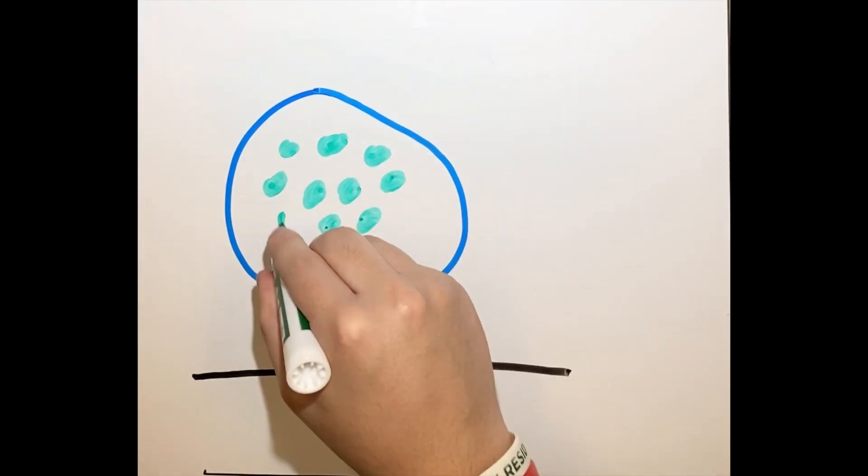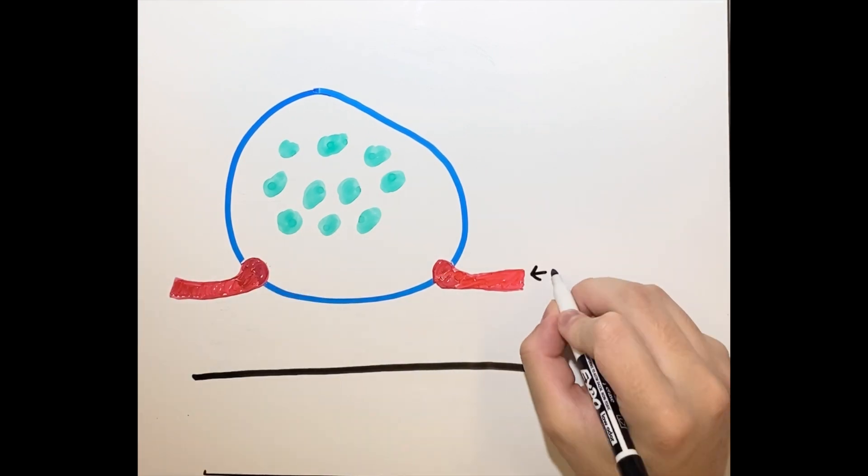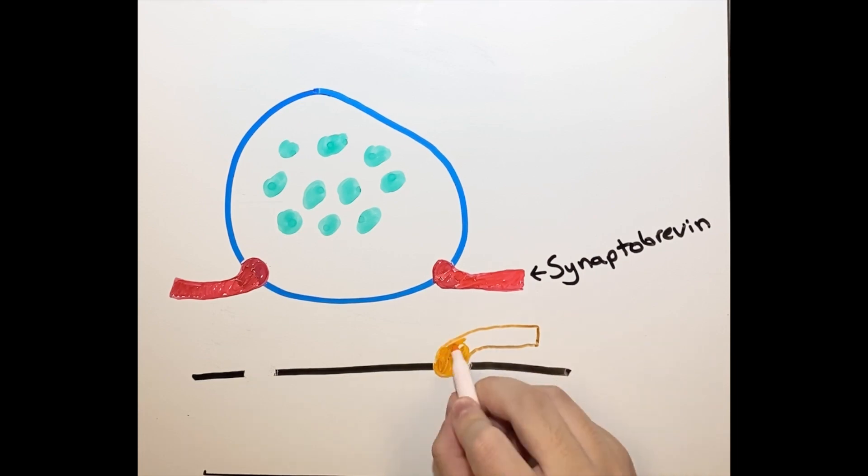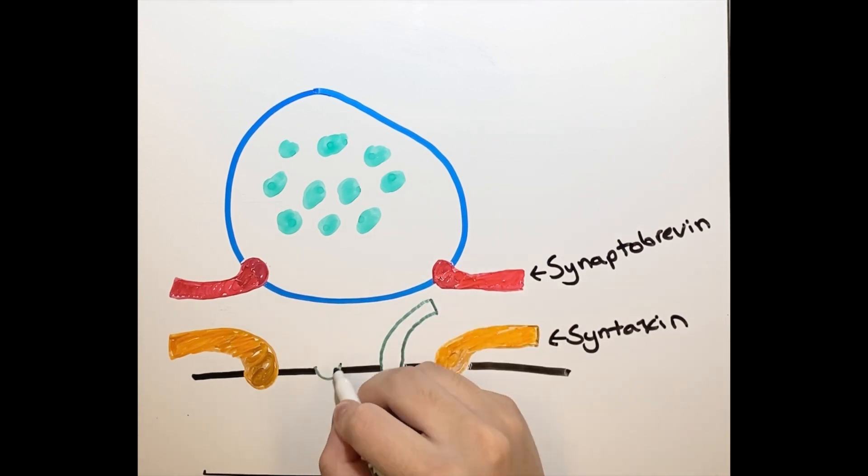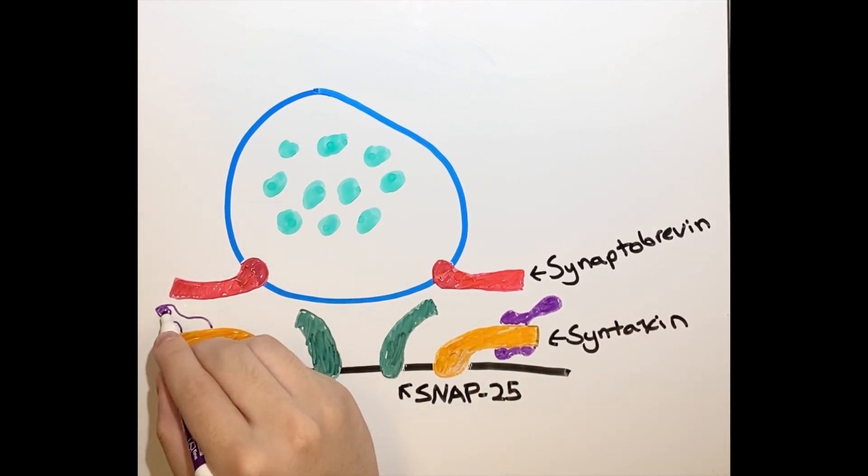After the vesicle reaches the active zone, the next step is membrane fusion, which occurs through multiple processes. The vesicular membrane is bound to the presynaptic membrane through four proteins. Synaptobrevin is the only vesicle membrane protein in this process and binds to two proteins upon the neural membrane: SNAP-25 and syntaxin. Munc18 is also present and is a cytosolic protein that binds to the structure.